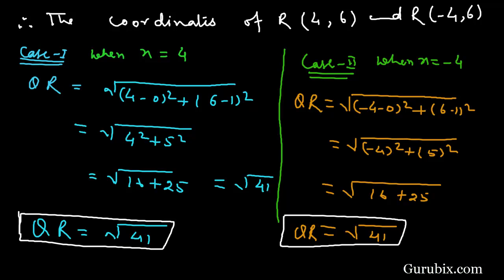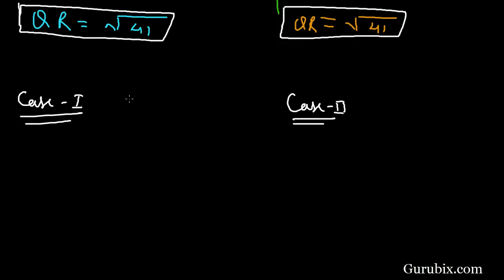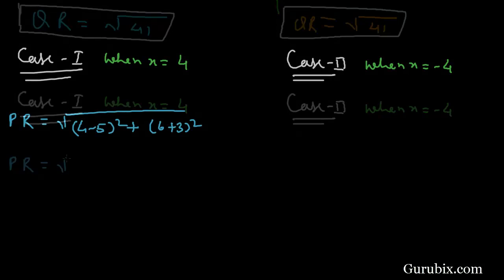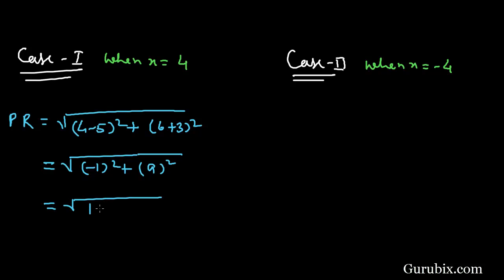Now we shall find the distance PR, with two cases. In case 1, when x = +4: PR = √((4 - 5)² + (6 + 3)²) = √((-1)² + 9²) = √(1 + 81) = √82.